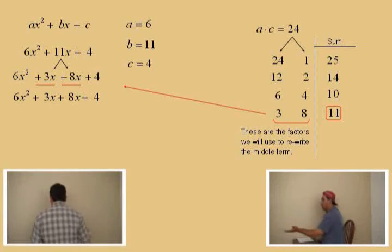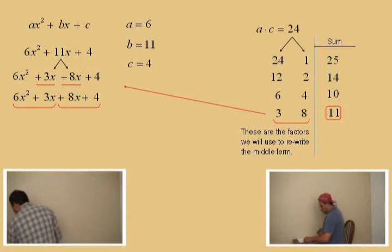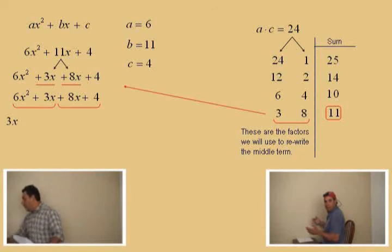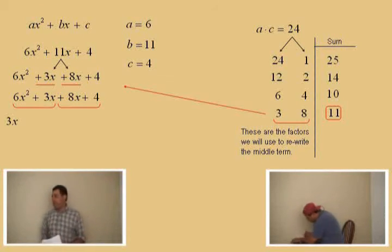Now, Charlie, what's the greatest common factor for the first group? Can you do this one? 3x. It is a 3x. There we go. So, we'll bring our parentheses.